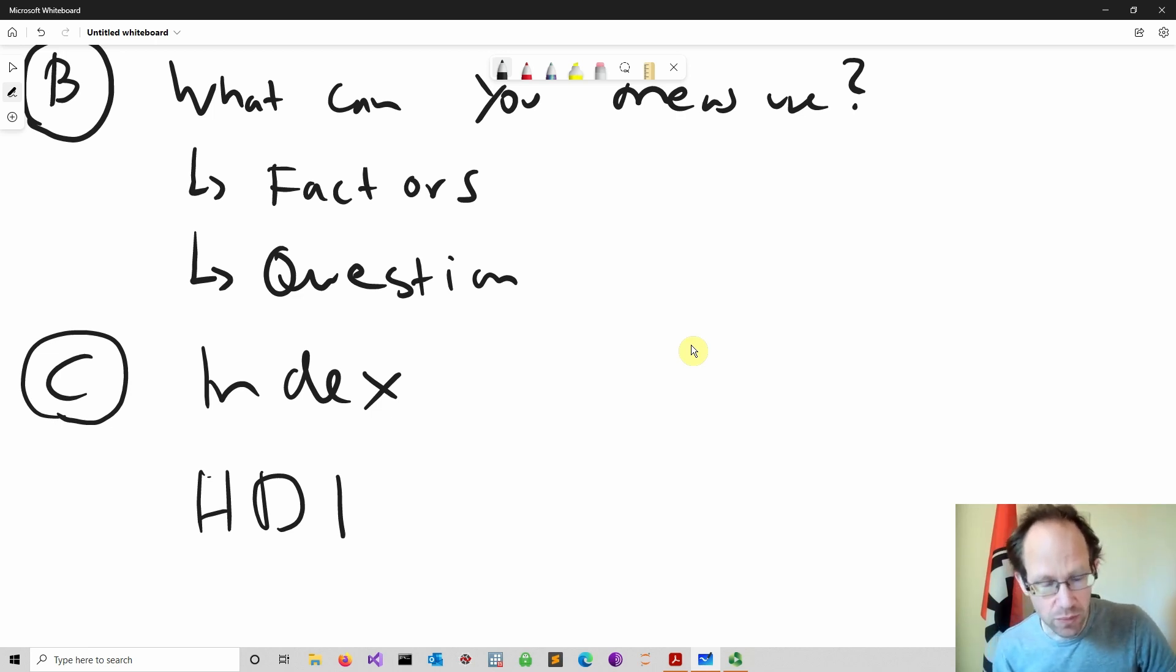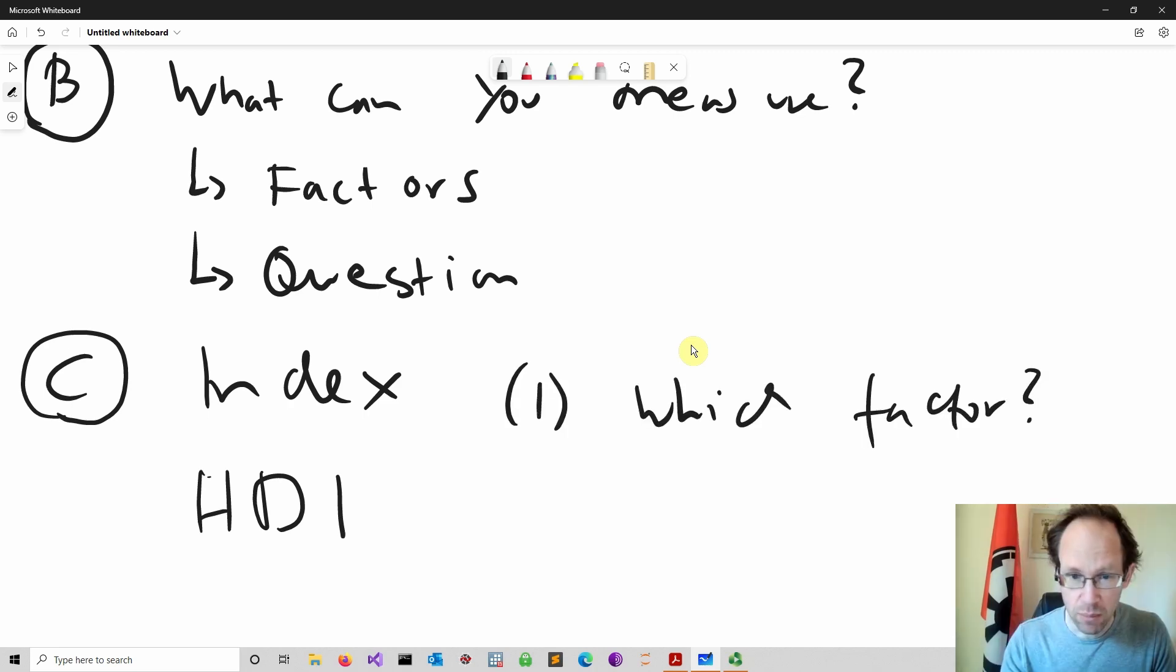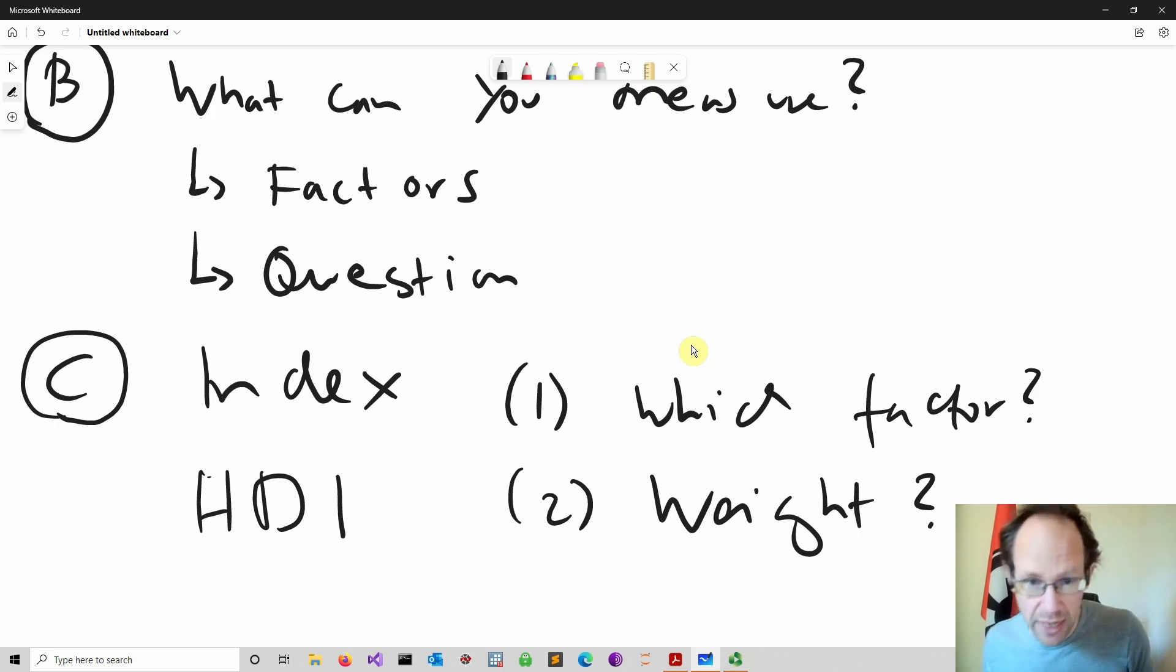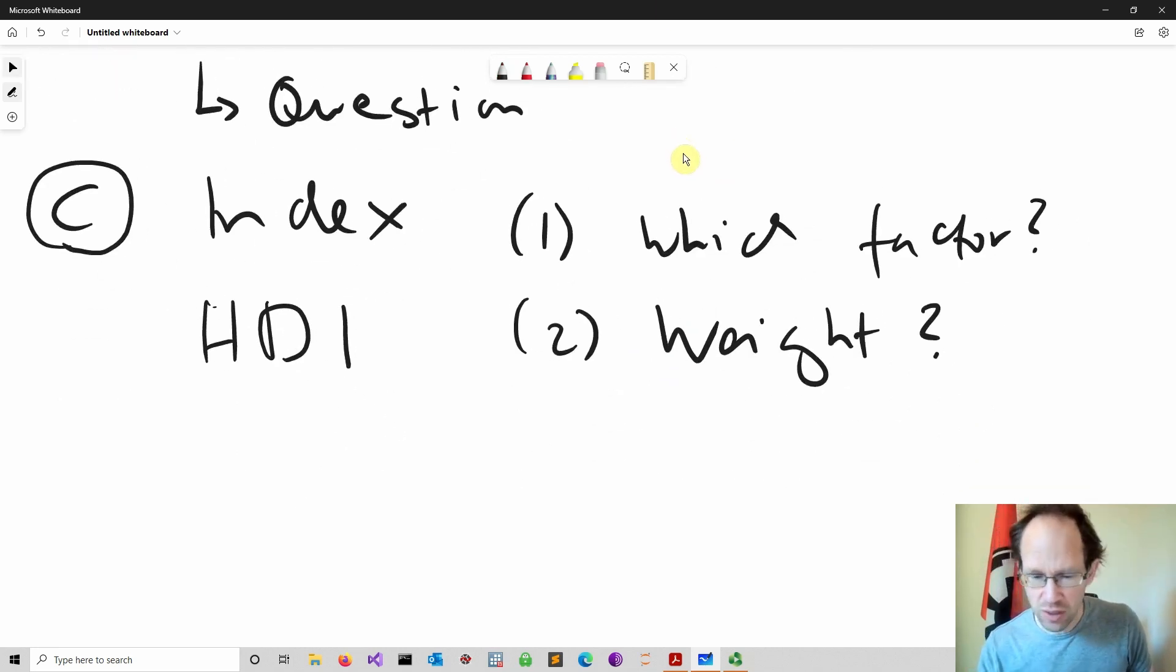The issue of index construction is always how do you determine which factor goes in, number one, and number two, what is the weight? Is it equally weighted? Very often it is, but the issue is there is no reason why it should be equally weighted.